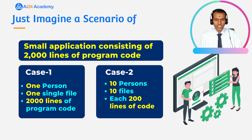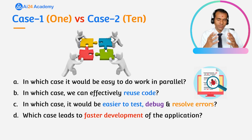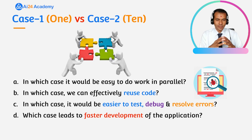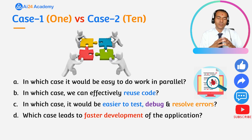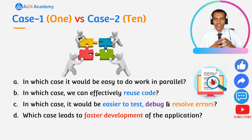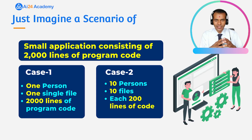Now let us compare case one and case two with respect to four questions: in which case is it easier to work in parallel, in which case can we effectively reuse the code, in which case is it easier to test, debug and resolve errors, and in which case does the application development happen faster?